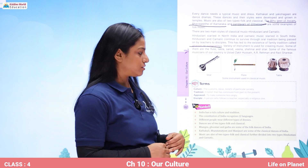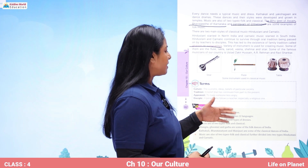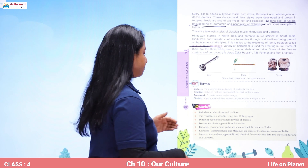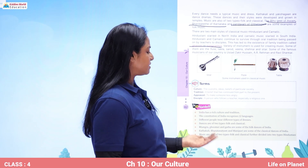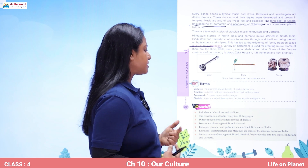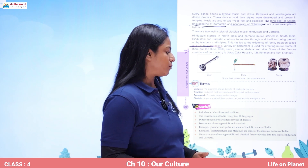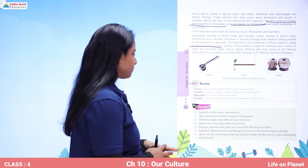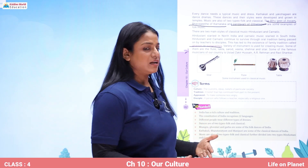These are the terms we learnt today. Culture: the customs, ideas, beliefs of a particular society. Tradition: a belief that has continued from the past to the present. Appeased: to make someone less angry. Disciple: a person who follows a teacher, especially a religious one. Key points: India has a rich culture and tradition; the Constitution recognizes 22 languages; people wear different types of dresses; dances are folk and classical; Bhangra, Ghoomar and Garba are folk dances; Kathakali, Bharatanatyam and Manipuri are classical dances; music is also folk and classical — further divided into Hindustani and Carnatic.